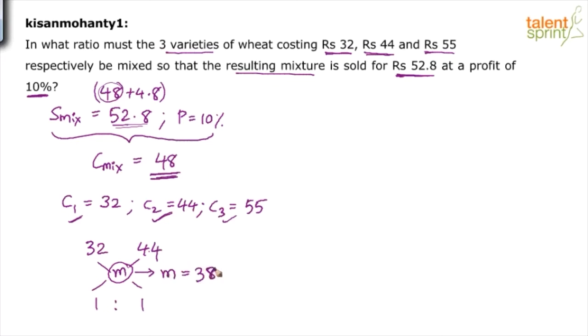If I mix the first two varieties, I will get a mixture at the rate of 38 rupees. Now, the whole scenario changes. Now we will say there are only two varieties: C12, which is a mixture of 1 and 2, which is costing 38 rupees. Remember, they were mixed in the same ratio, 1 is to 1 ratio. And then there is C3, which is costing 55 rupees. And then there is a mixture which is costing us 48 rupees.